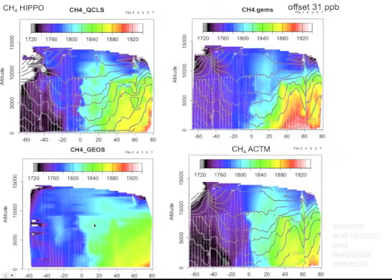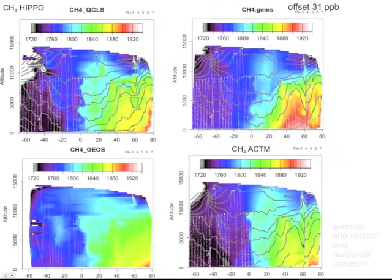Looking at the GeosChem model — the Harvard model using NASA assimilated winds — they do a pretty good job representing where the sources are and how they get distributed through the northern hemisphere. They actually don't do a particularly good job on the gradient between the northern hemisphere and the southern hemisphere; they're quite a bit off on that. The Japanese model is actually doing pretty well in all those measures, so if there was a derby, the Japanese model wins it.